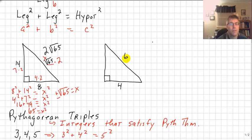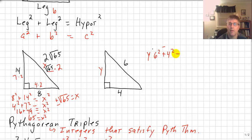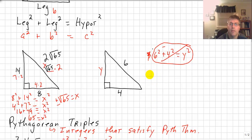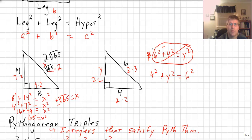Now we could do the same thing with a different triangle where we want to find the length of one of the legs and not the hypotenuse. We have to be careful — this isn't going to be 6 squared plus 4 squared equals y squared, because we are not looking for the hypotenuse. This problem would be 4 squared plus y squared equals 6 squared. I'll leave this for you to solve for y. You could also use the reduced triangle principle there, since 4 is 2 times 2 and 6 is 2 times 3.